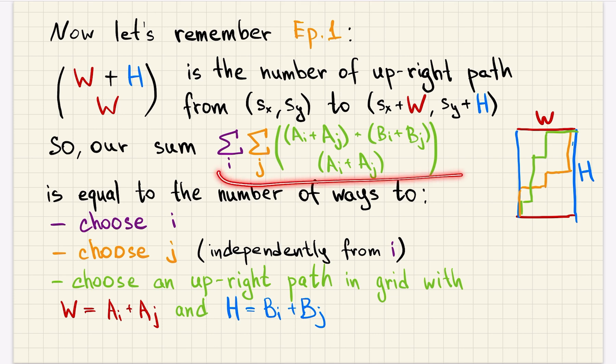So we are asked to calculate the sum and we can see it as the number of ways to choose i, choose j, and then choose something, a number of which is equal to this number, and we know that that's the number of upright paths in the grid with given width and height.